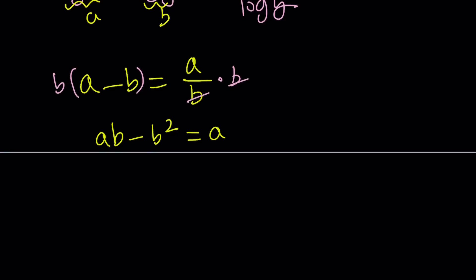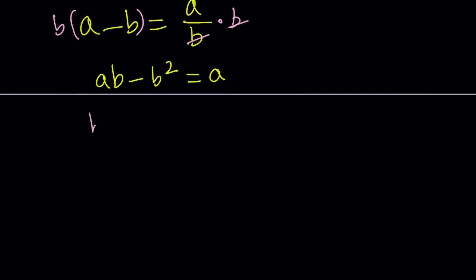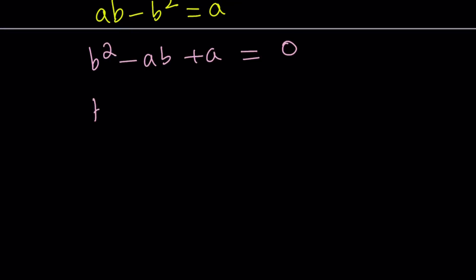Now we're going to put it in a nicer form. Since we have a b squared, we can make it a quadratic. Let's put everything on the right-hand side. So we get b squared minus ab plus a equals 0. If you treat this as a quadratic in b, because b is squared, then we can write the solutions using the quadratic formula.